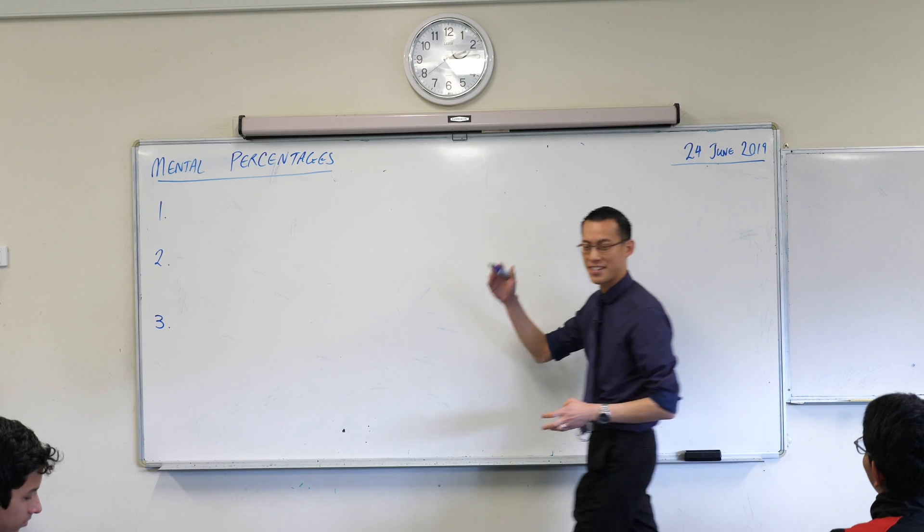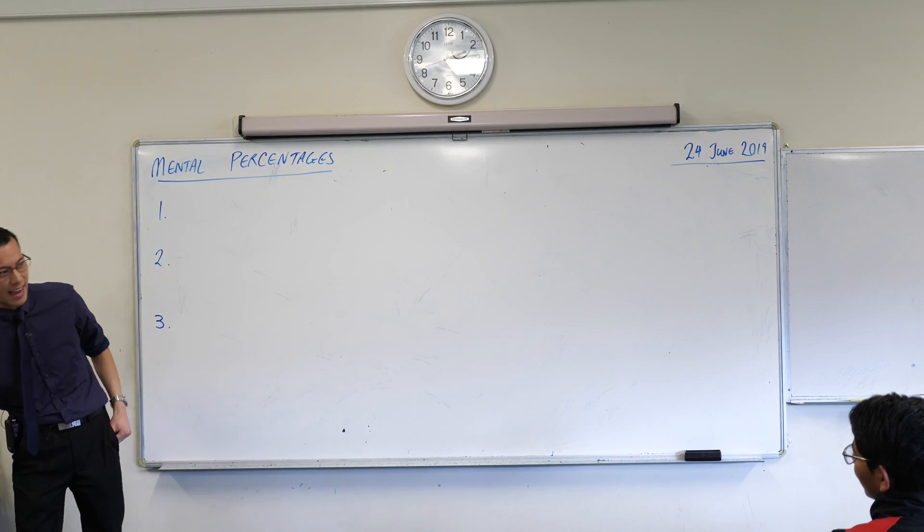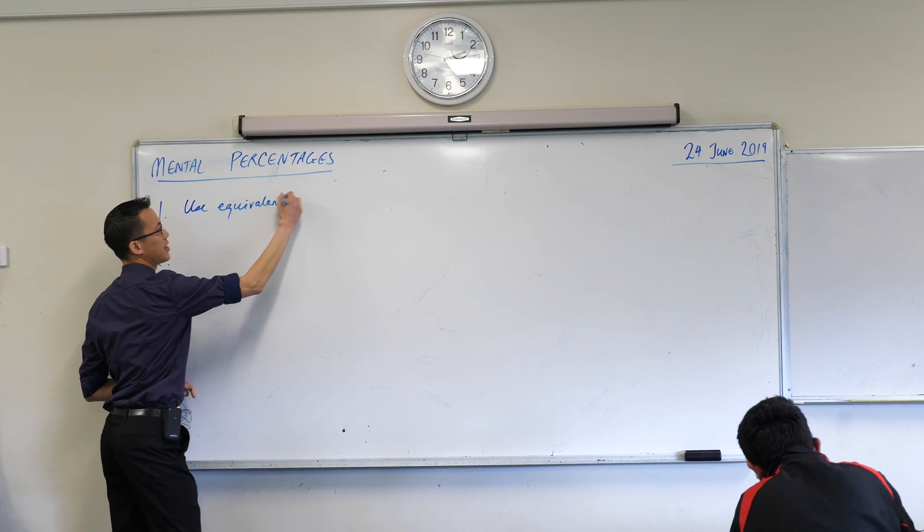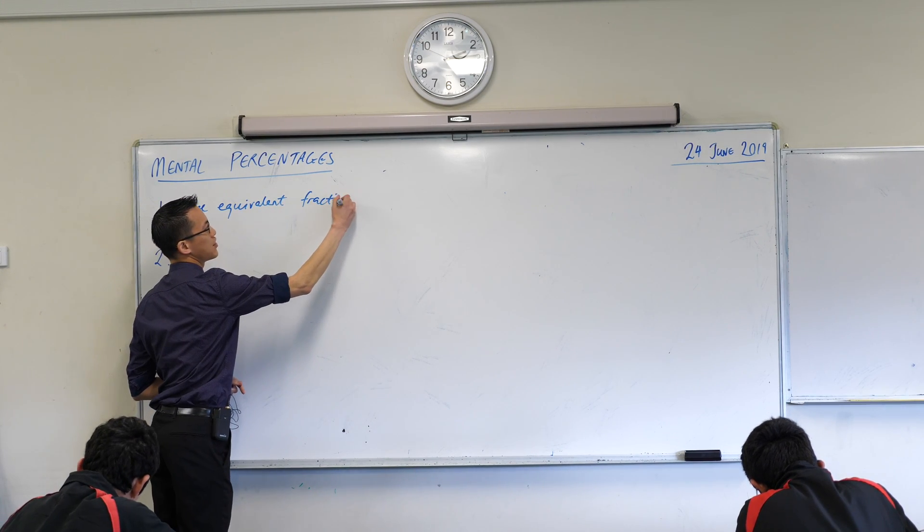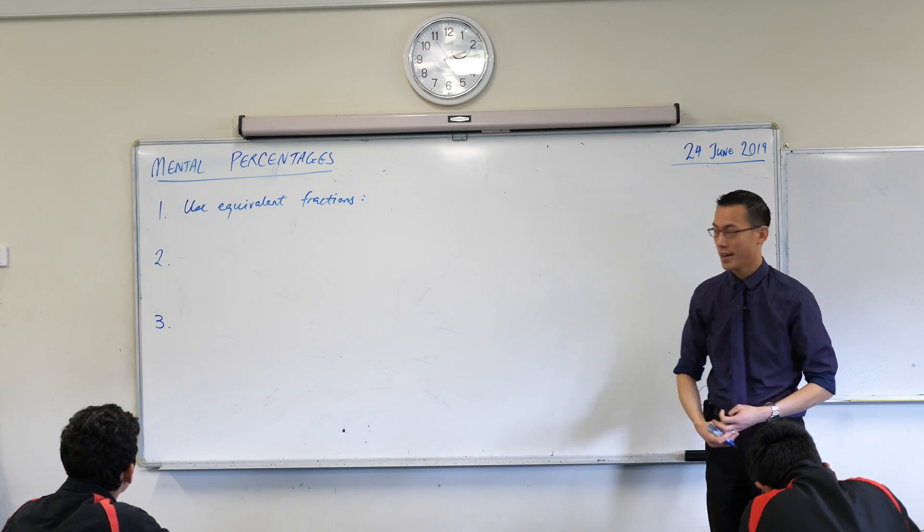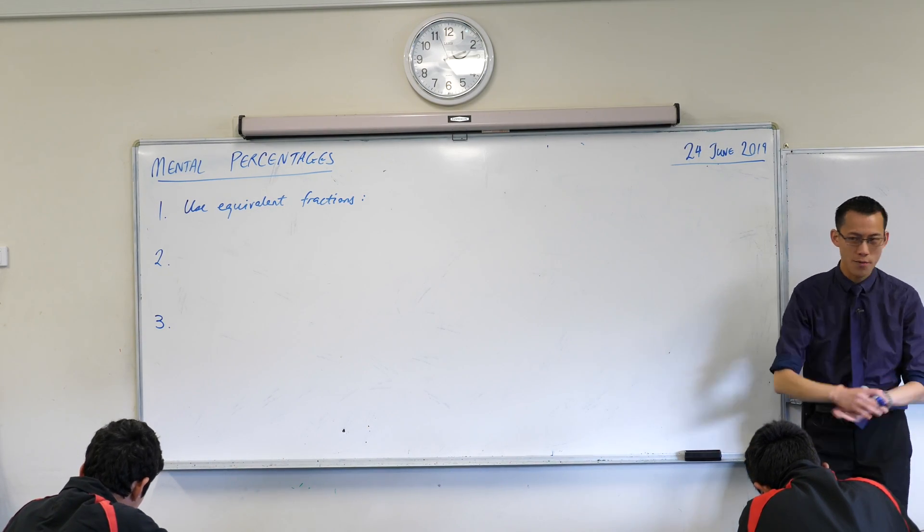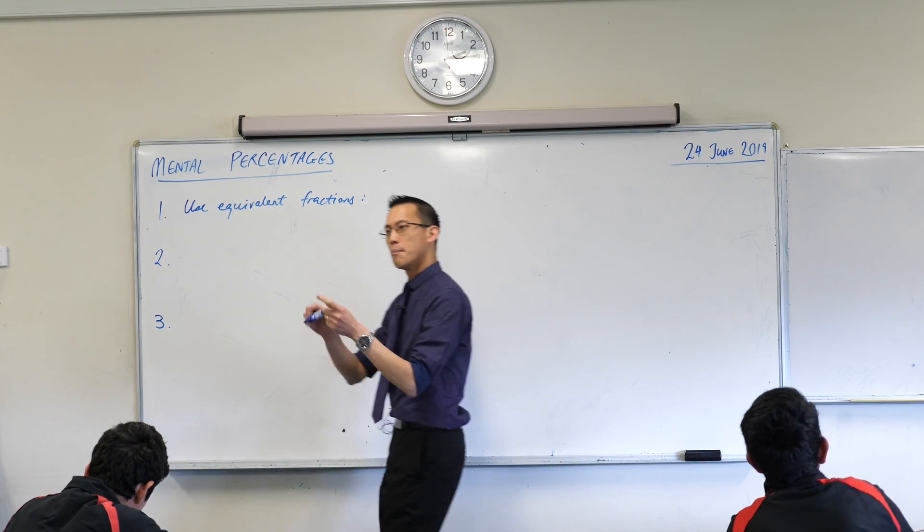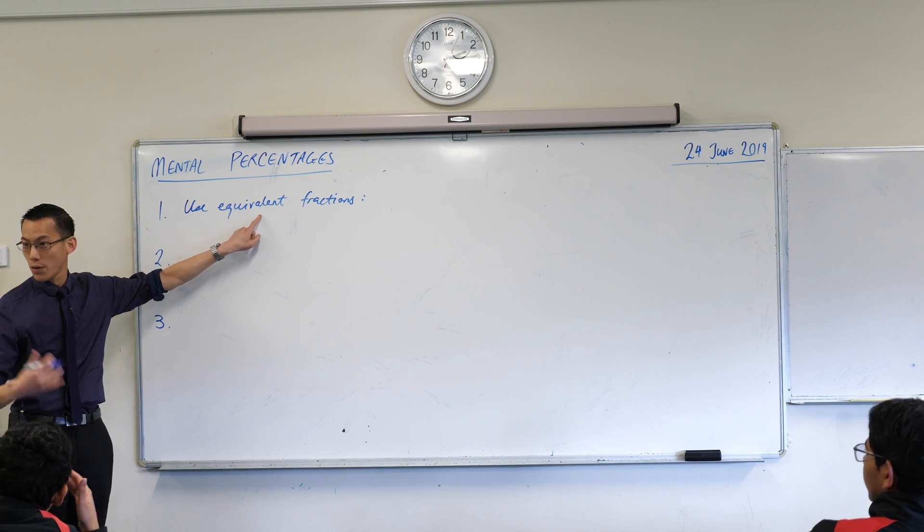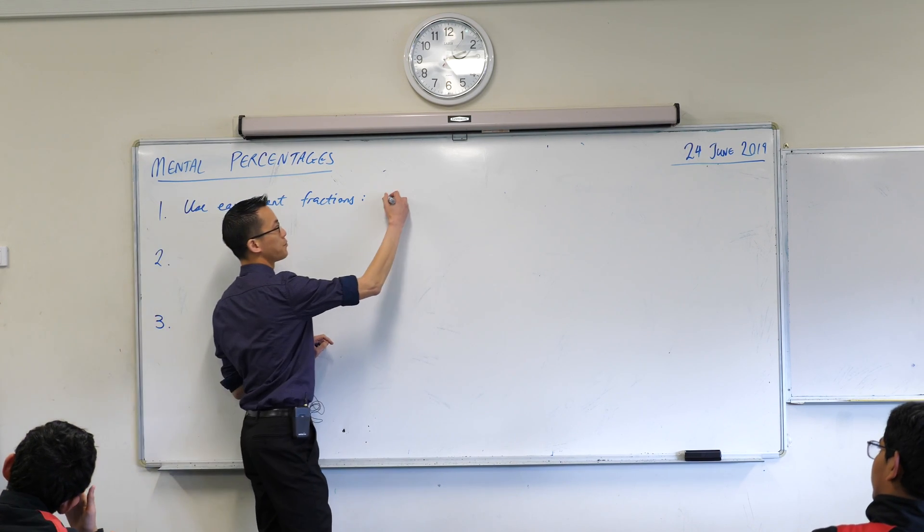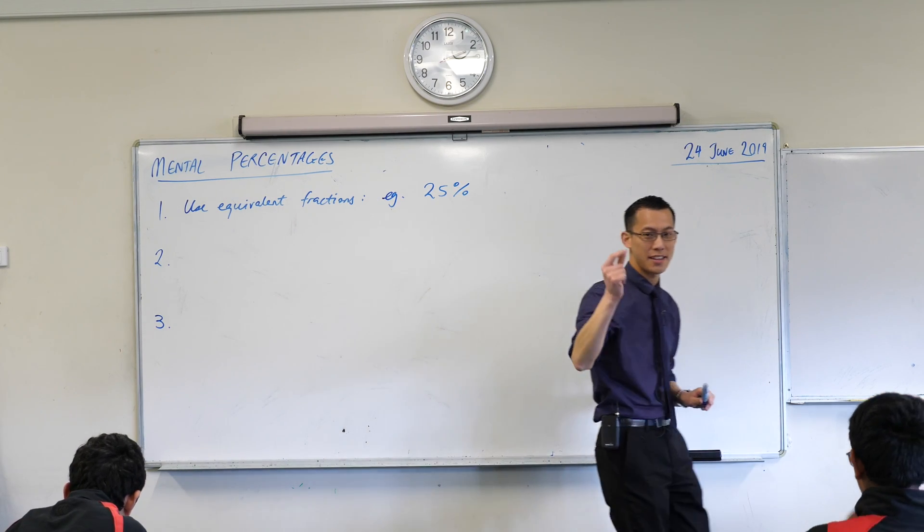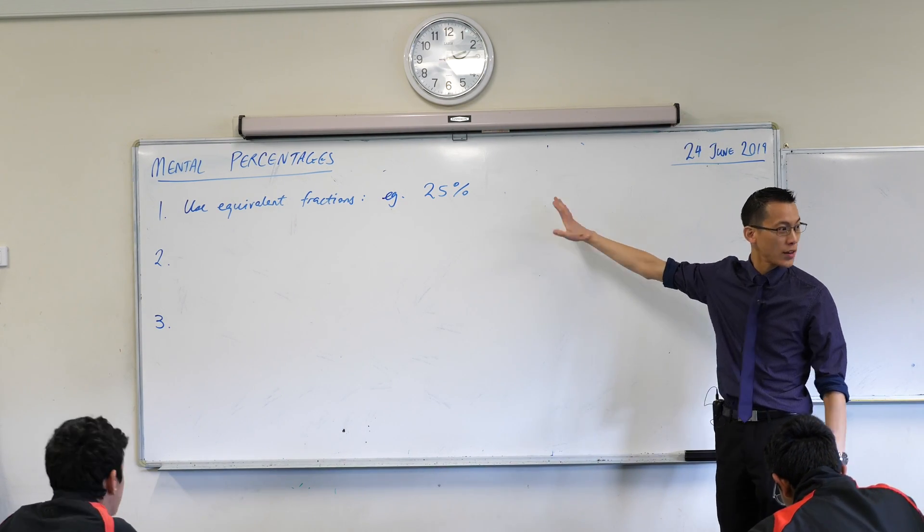Here's for mental percentages: my first tip for you is when you can use equivalent fractions. Now we know what equivalent fractions are. Every percentage that you have ever met is a fraction, it's just a fraction over a hundred. 23% would be 23 over 100, 70% is 70 over 100, but lots of the fractions you're going to encounter have nice convenient equivalent fractions for them.